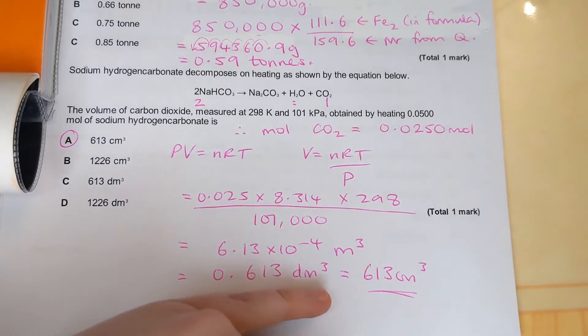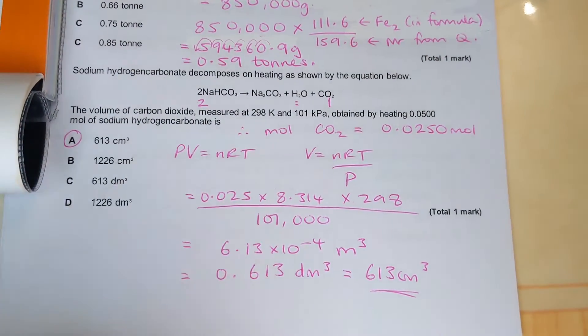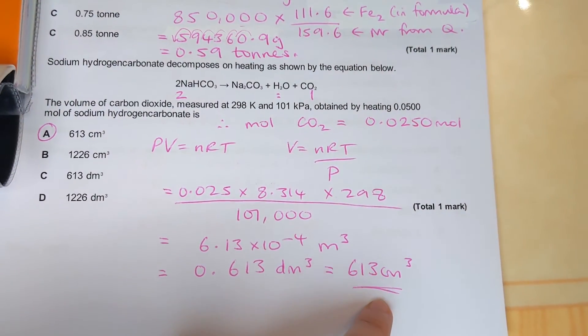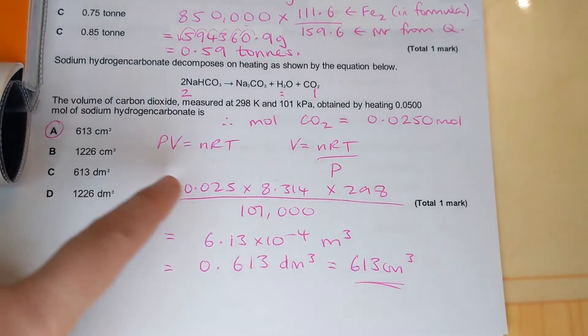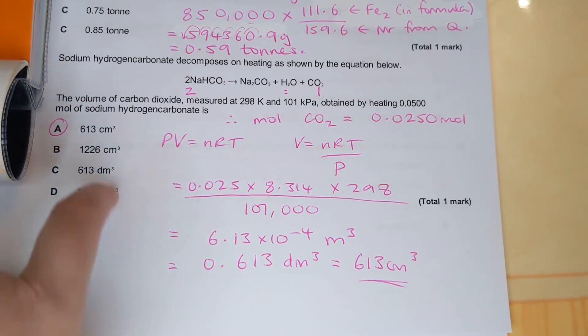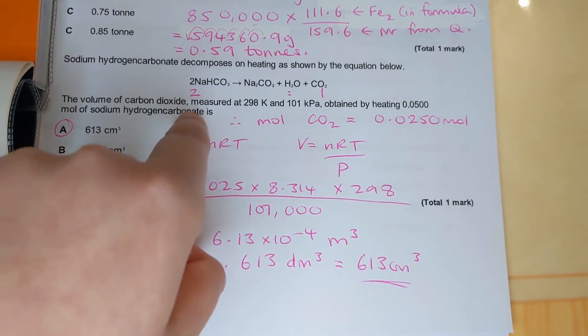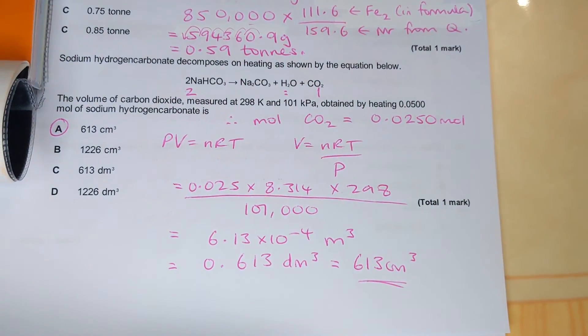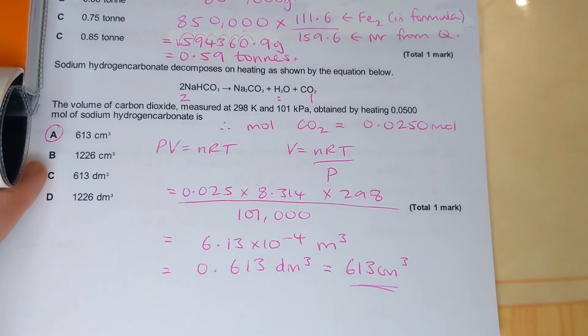And we come out with a volume in meters cubed. So I converted that into decimeters cubed, doesn't match this so C can't be the right answer. And then I converted it into centimeters cubed and that matches with A. Now it's not B or D. If you got either of those answers that would have been you forgot to divide the moles by two to get the carbon dioxide. So if you left the moles at 0.05 you'd come out with one of those two, B or D.